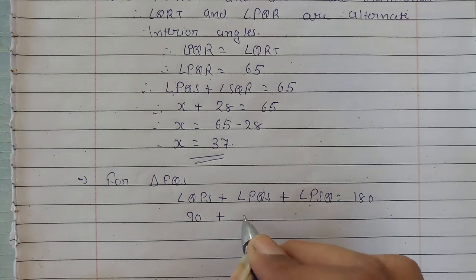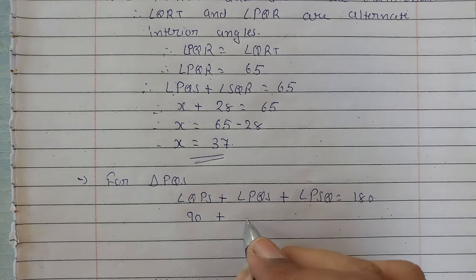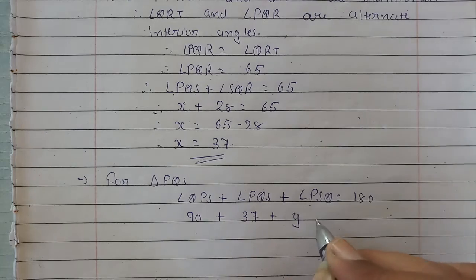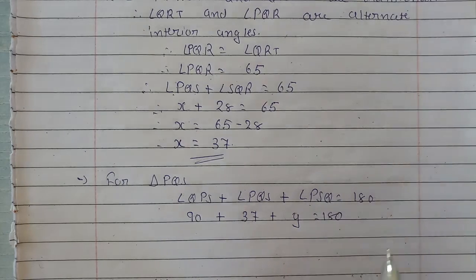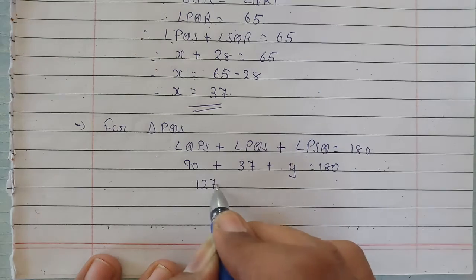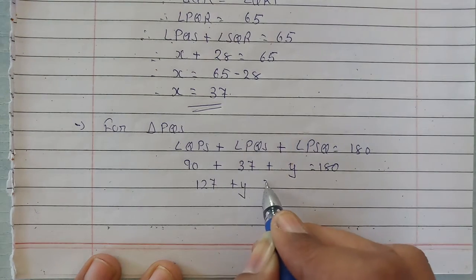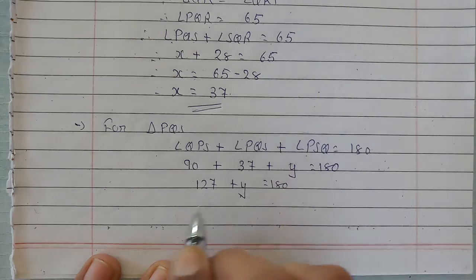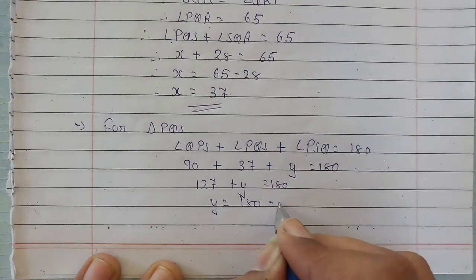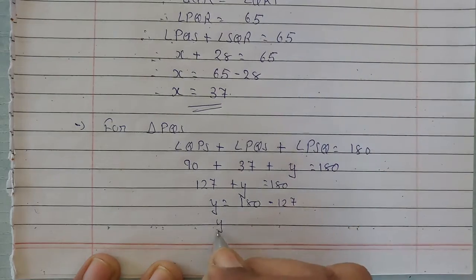So the addition will be 180. Now 90 plus 37, that will give you 127 plus y equals 180. We need y, so moving 127 to the right side, y will be 180 minus 127.